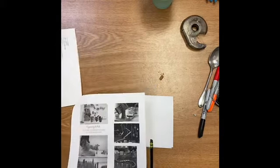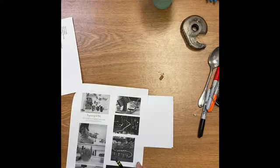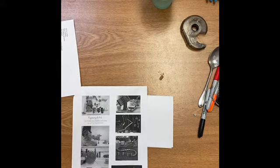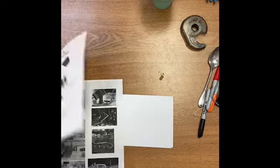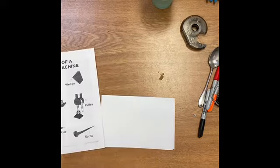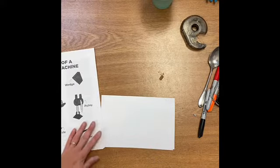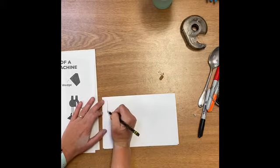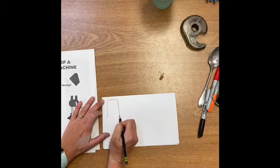All right third graders, we're gonna make an invention today that completes a really simple task, something like turning on a light or popping a balloon or making toast, and we're gonna make it up of simple machines. So I'm gonna show you an example right now. Mine will be to fry an egg, so I'm gonna have a refrigerator here.